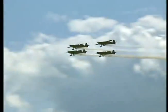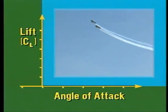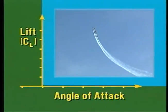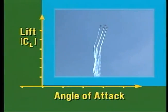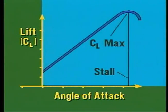A way to measure lift as it relates to angle of attack is the mathematical expression coefficient of lift, or CL, which is determined by wind tunnel tests and is based on the design of the airfoil. Each airplane has an angle of attack where maximum lift occurs; this point is known as CL max. Beyond this point, the airflow begins to separate from the wing surface, becoming so turbulent that the airfoil can no longer create lift. At this point, the wing is in a stalled condition.